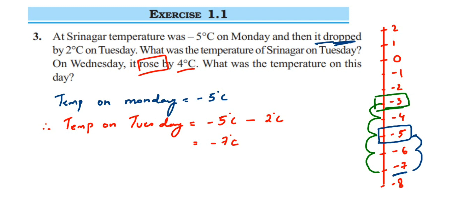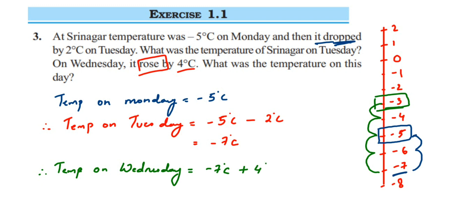Drop means subtract; rose means add. The temperature on Wednesday: we take Tuesday's temperature because we're calculating from Tuesday. So we take minus 7 degrees Celsius — not minus 5 — and since it rose we add 4 degrees Celsius. The integers now have different signs.